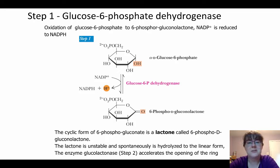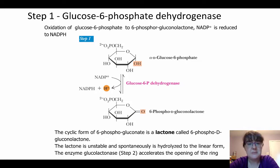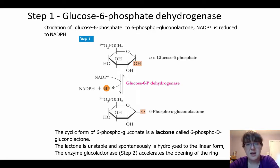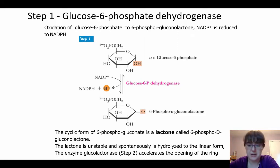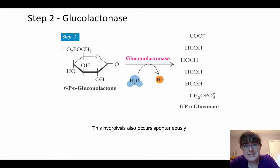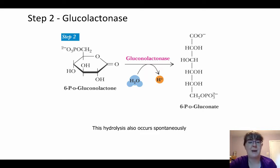Step one: oxidation of glucose-6-phosphate. What happens here is that when you have this oxidation, you then wind up reducing NADP+ to NADPH, and you get a cyclic form of 6-phosphogluconate, which is a lactone. This lactone is actually unstable and will hydrolyze by itself, but the enzyme glucolactonase accelerates the opening of the ring. The hydrolysis would actually occur spontaneously — the enzyme just makes it happen faster.